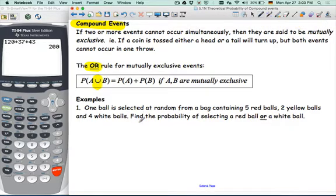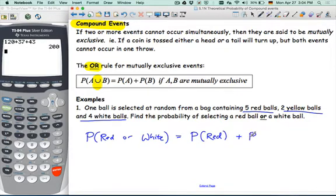Probability of A or B is the symbol, is the probability of A plus the probability of B if we have no overlap, if they are mutually exclusive events. So here's an example where you have this situation of compound events, where the events are mutually exclusive. Okay, so let's look at example one, one ball is selected at random from a bag containing five red balls, two yellow balls, and four white balls. Find the probability of selecting a red ball or a white ball. So probability of red or a white ball is going to be probability of picking a red ball plus probability of picking a white ball. Because you can't have a red, red and a white are mutually exclusive events that can happen at the same time. So the probability of red is five out of 11 plus the white is four out of 11. It's gonna be nine out of 11. Excellent.